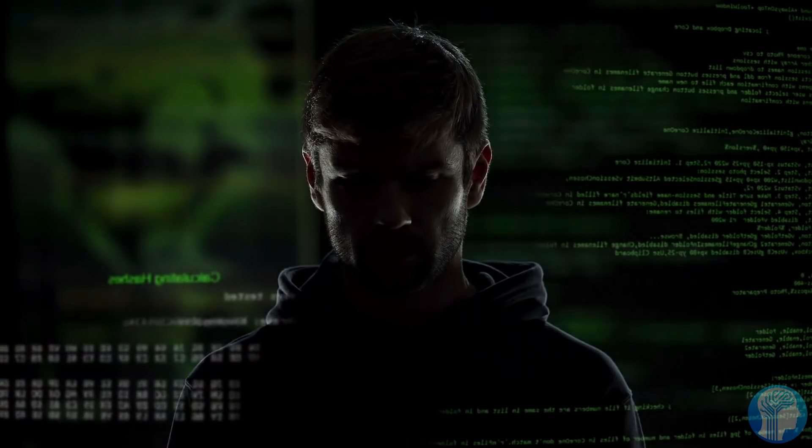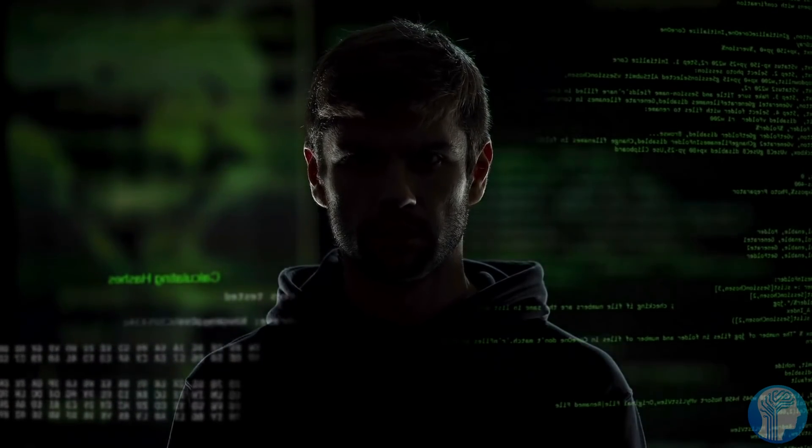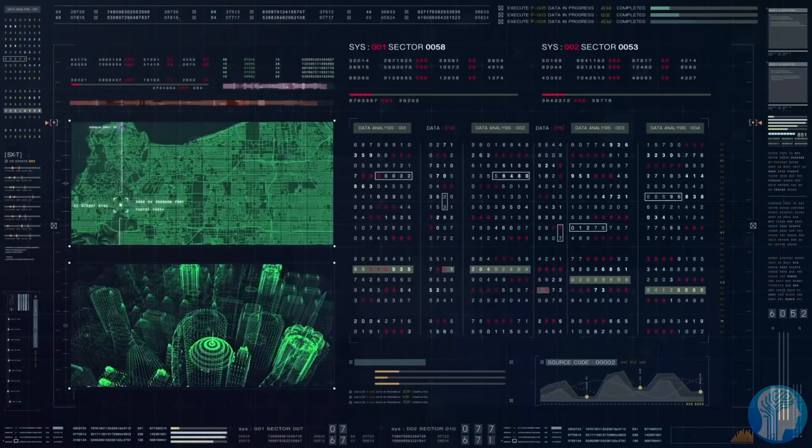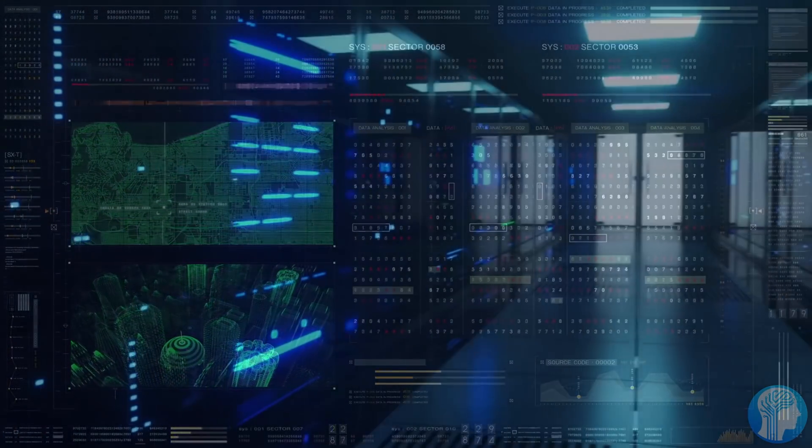The Alphabet subsidiary tested its system against coding difficulties used in human competitions and discovered that its algorithm obtained an estimated rank, putting it among the top 54% of human programmers.